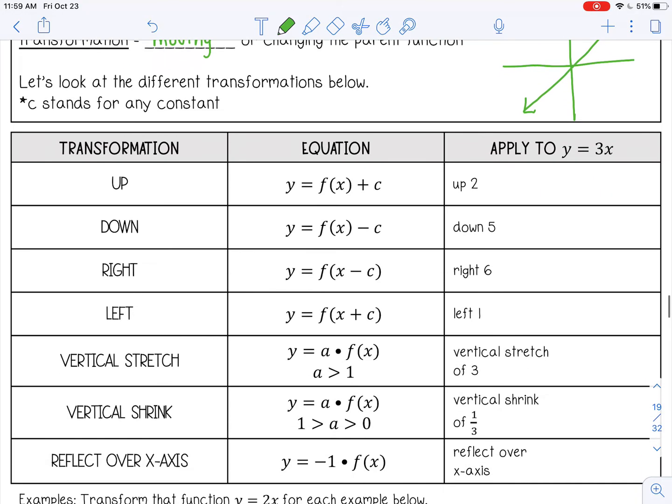Okay, so if I want to move a line up, then I'm going to add to my function. So if this is my line, y equals 3x, and I want to move it up two, then my new line would be 3x plus two. So you just add to the end, however far up you want to go. So that would move the line up two units.